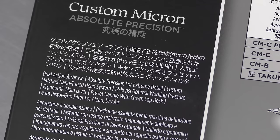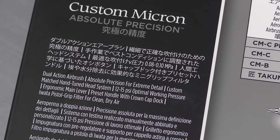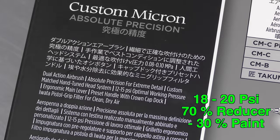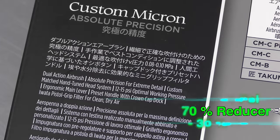On the back of the box, it's a dual action airbrush with absolute precision for extreme detail, custom matched hand-tuned head system, 12 to 15 PSI optimal working pressure, ergonomic main lever, preset handle with crown cap dock, and the Iwata pistol grip filter for clean dry air. That's a bit lower than what I would usually run my Microns at, which would be 18 to 20 PSI.